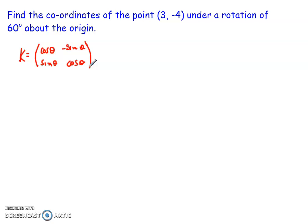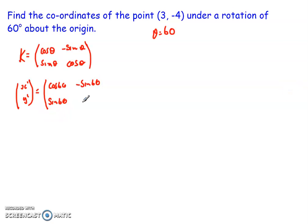In this case because it's 60 degrees, what I know is that θ is equal to 60. So what I can then do is look to get my transformed points, so x dash y dash, and I know that's going to be given by doing cos 60, minus sin 60, sin 60 times cos 60, and I'm going to multiply that by a column vector representing the point (3, -4).